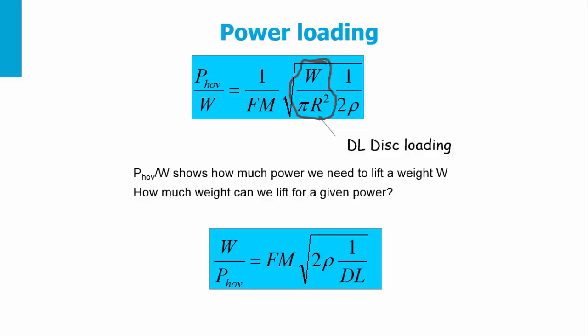For a good rotor, the figure of merit is 0.75. For a rotor designed for high speed, the figure of merit is 0.6. We always have to make a compromise between hover and high speed, which results in a lower figure of merit.